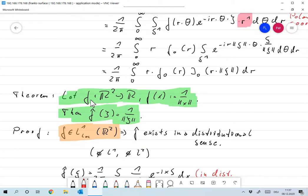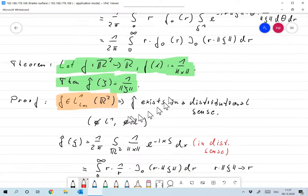Okay, application of that. Let's F from R2 to R, F of X as 1 over norm of X. And I claim that then the Fourier transform of F is given by 1 over norm of psi. So more or less that says in R2, the Fourier transform of 1 over norm of X is 1 over norm of X. Okay, so first of all, does the Fourier transform exist?